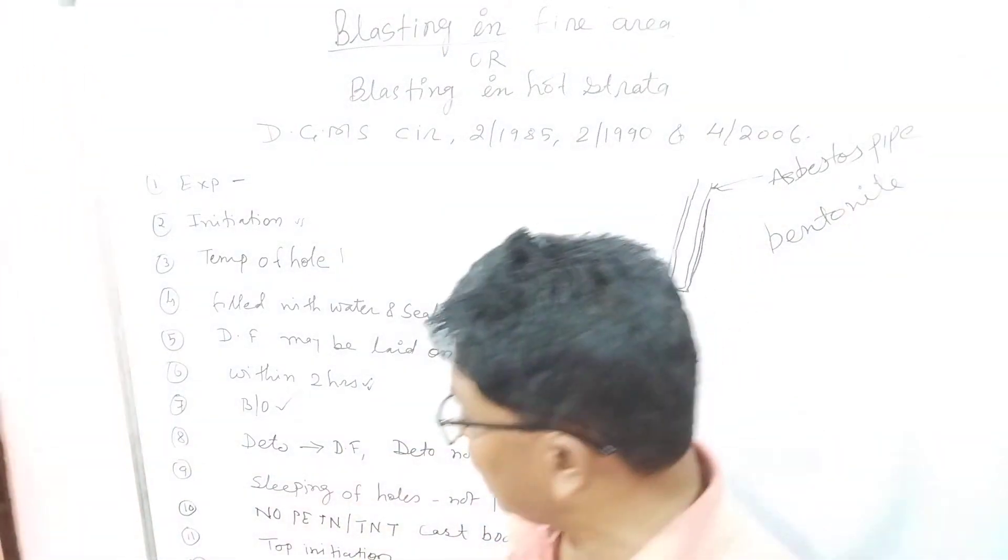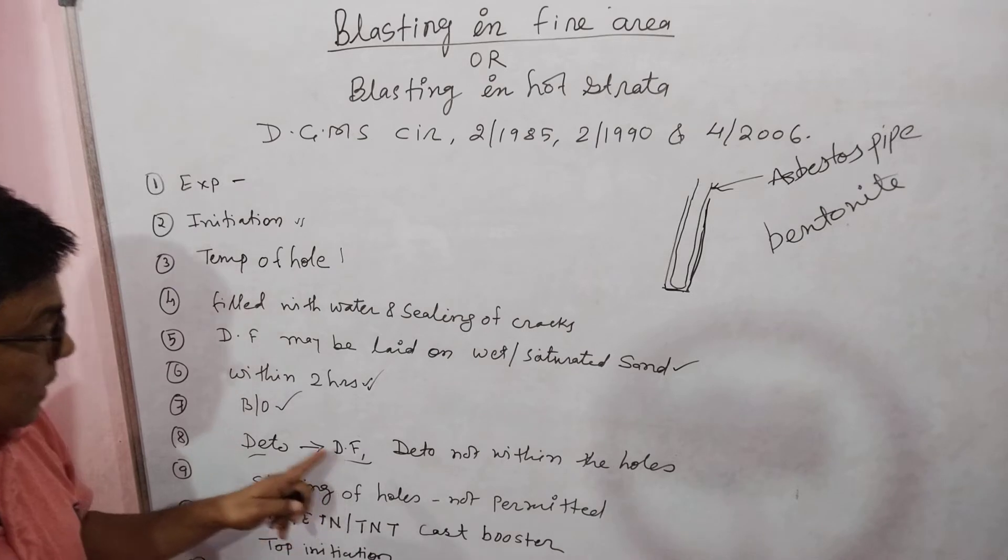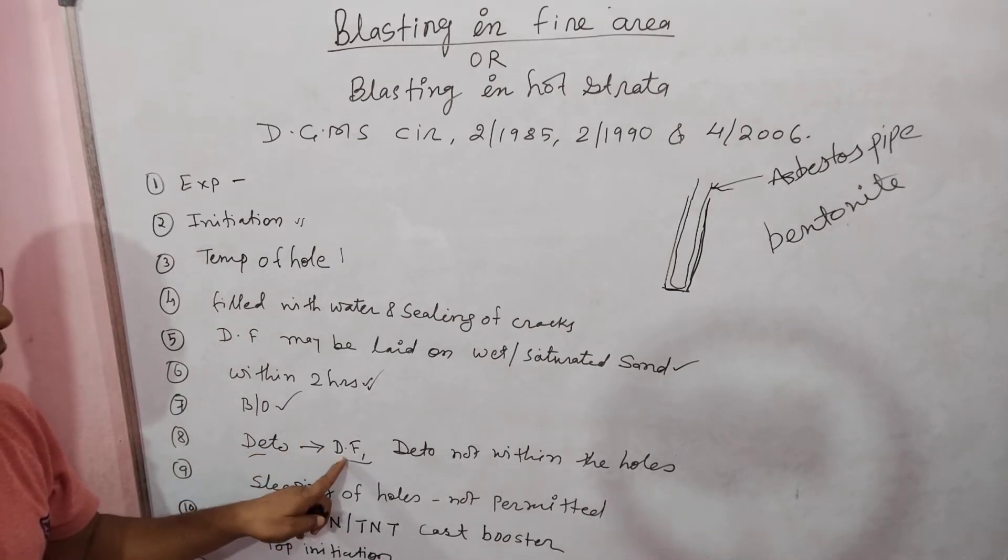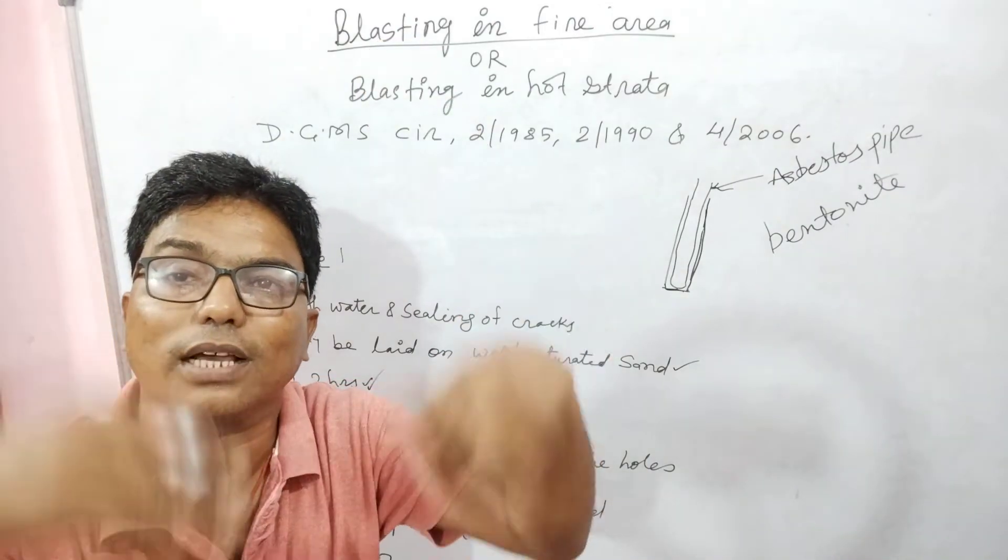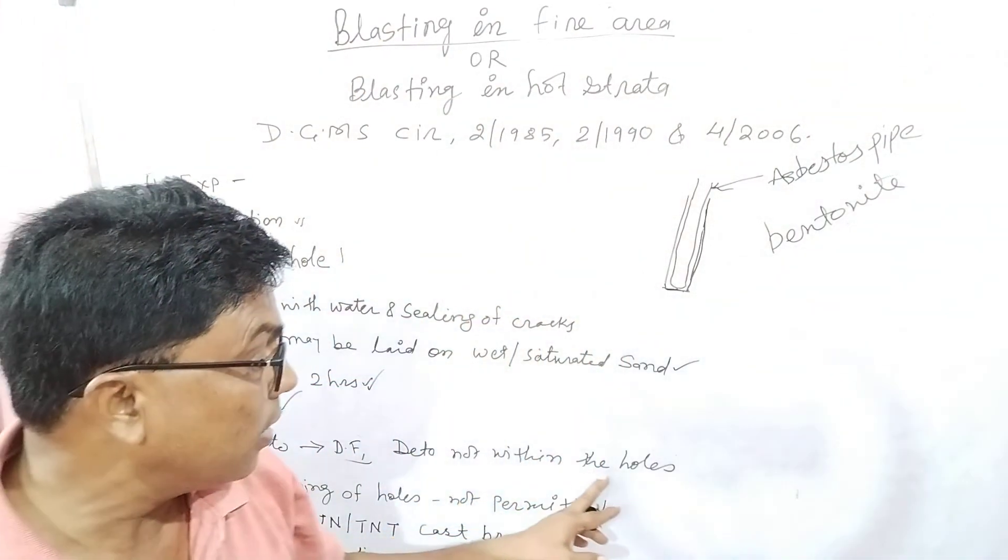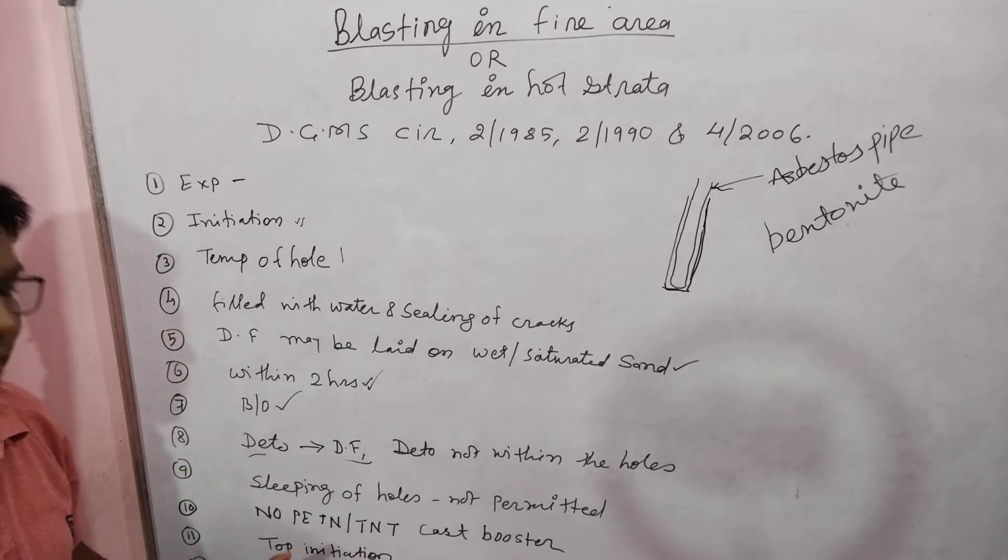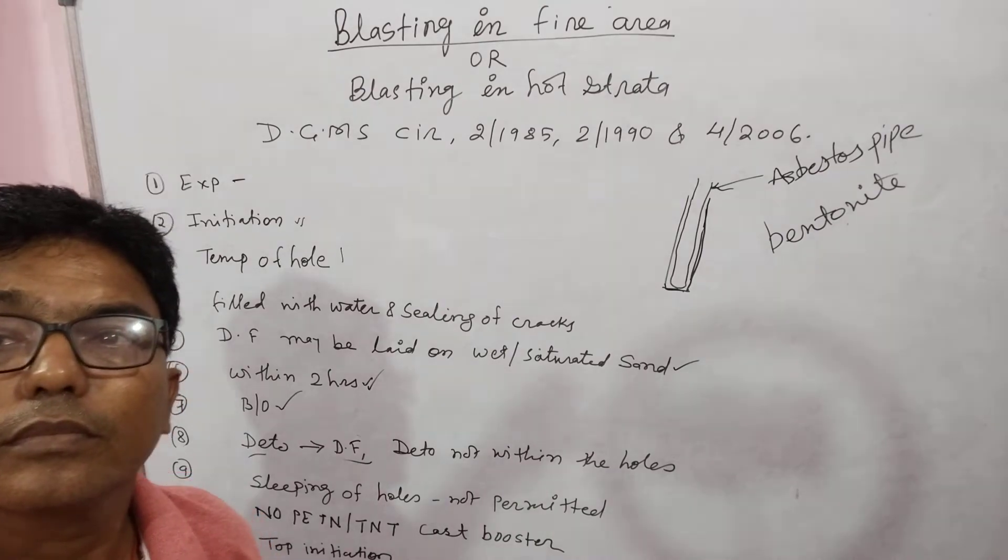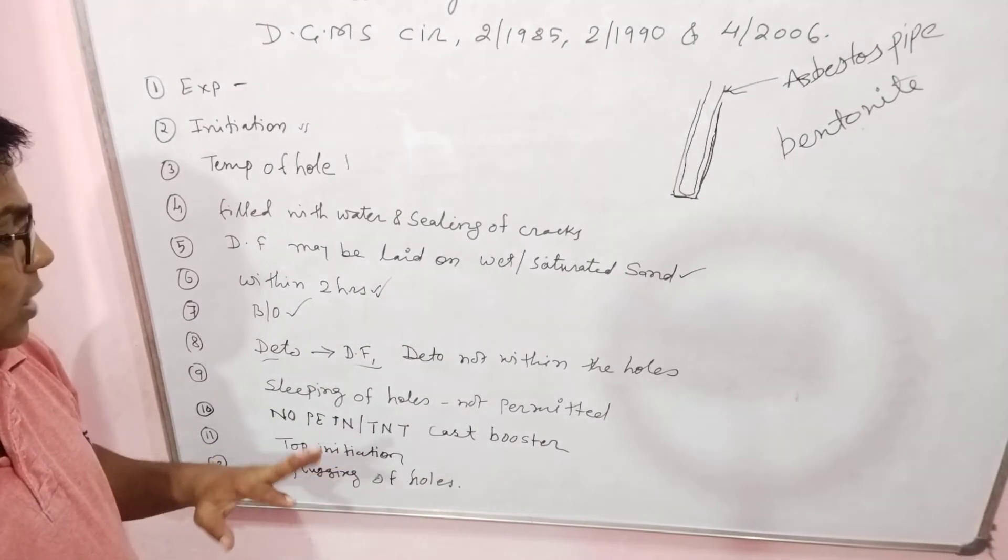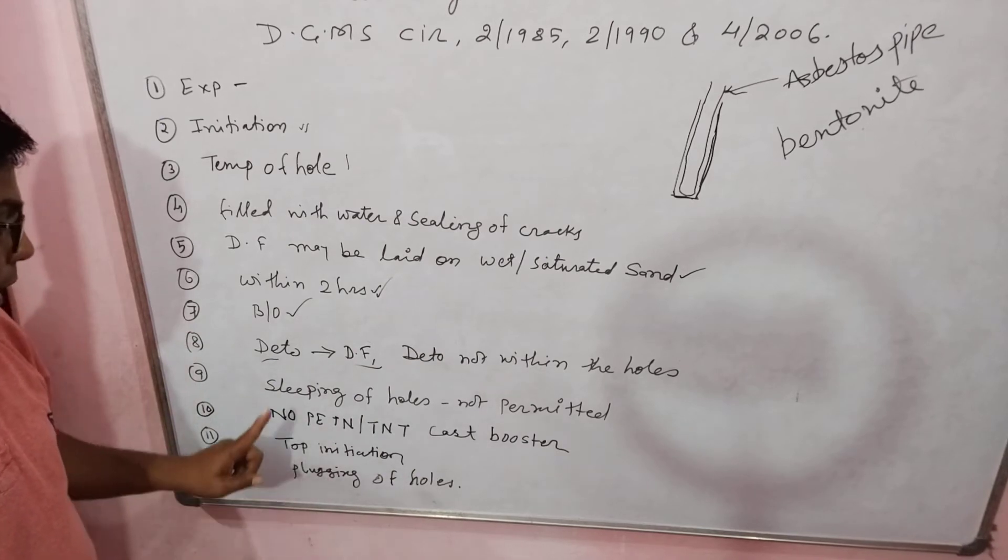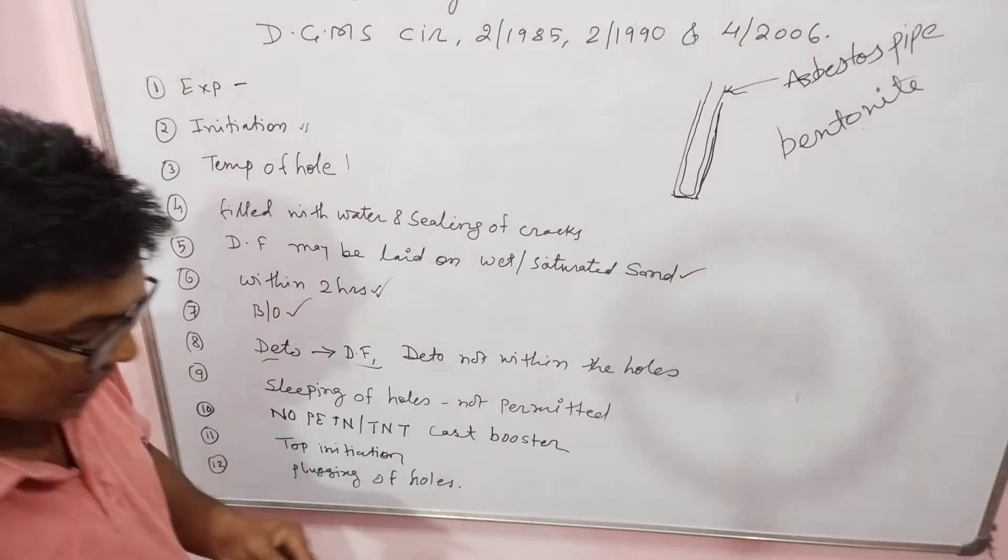You use the detonating fuse and connect to the surface. You don't need the hole to be sleeping. Sleeping holes not permitted - you can't use them in hot strata for blasting.